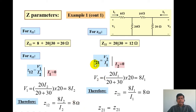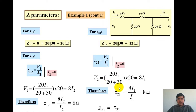Similarly for Z21, port 2 is open-circuited. The current I1 flowing through the 8-ohm resistor divides between the 20-ohm and 30-ohm branches. By the current divider rule, the current through the 20-ohm resistor is 20·I1 divided by (20 + 30), and the voltage across the 20-ohm resistor is that current multiplied by 20, giving 8·I1. So the ratio V2 to I1 is again 8, meaning Z21 equals 8 ohms as well. We conclude that Z12 and Z21 are equal, but Z11 and Z22 are different.